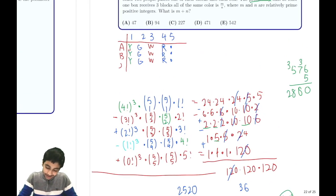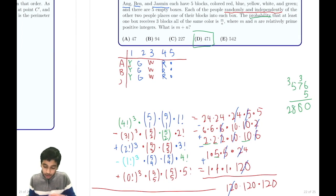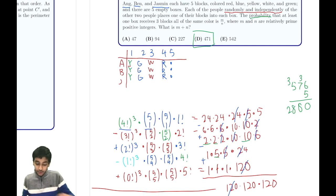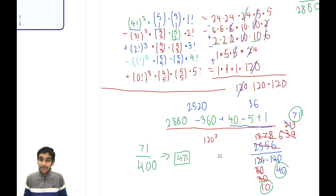The answer is 71/400, giving 71 + 400 = 471, which is answer choice D. To recap: we used PIE, computed 4!³ × 5C1 × 5C1 × 1! for the first term and similar expressions for the rest, applied alternating signs, did the arithmetic, and got 71/400. The PIE setup was elegant, though the arithmetic was quite tedious. Thanks for watching!